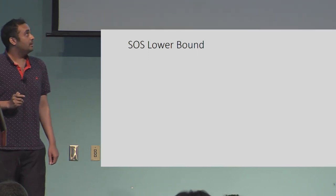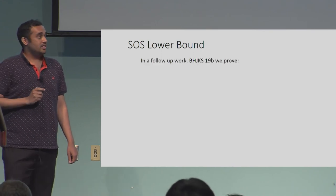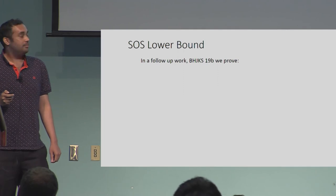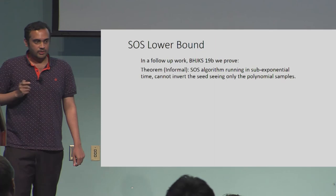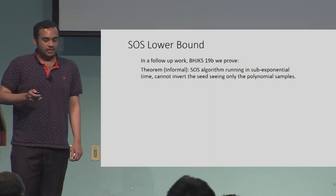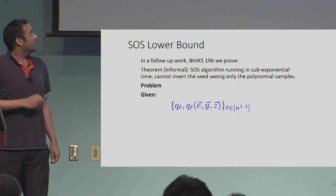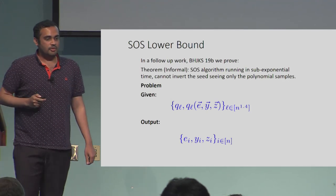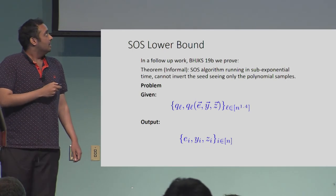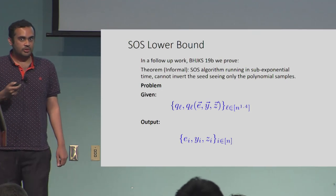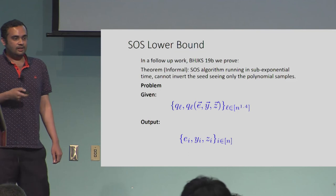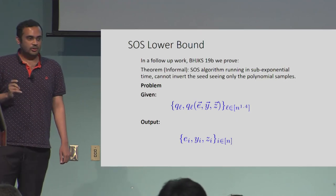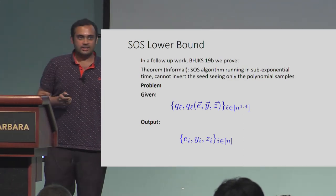Finally, let me talk about the sum-of-squares lower bound we can show — something also discussed at the crypto workshop a couple of days ago. In a follow-up work with Boaz, Sam, Pravesh, and Amit, what we can roughly show is that any sum-of-squares algorithm running in sub-exponential time cannot take these polynomial evaluations as leakage and recover the input of the polynomial. One observation is that we have completely ignored LWE leakage, because we do not know how to incorporate any finite field arithmetic into the sum-of-squares framework — an interesting open problem. With this, I would like to conclude my talk; please feel free to ask either me or Christian any questions you may have.